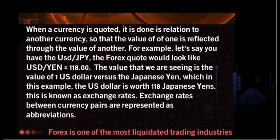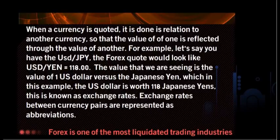The currency on the left — in this case the US dollar — is referred to as the base currency. The currency on the right side of the slash is known as the quoted currency. The value you are seeing is the value of one US dollar versus the Japanese yen, which in this example means the US dollar is worth 118 Japanese yen. This is known as the exchange rate.